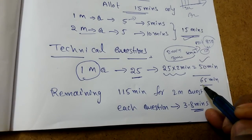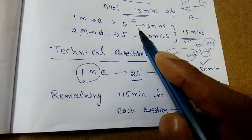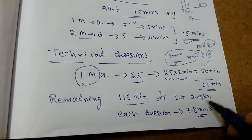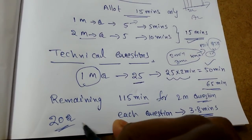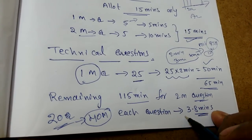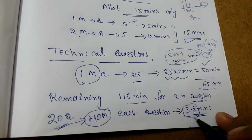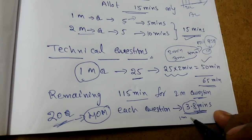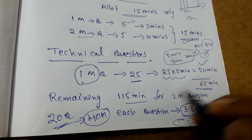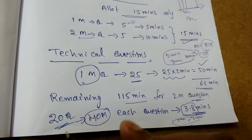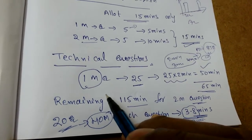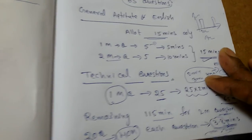So 50 minutes for technical one-mark questions plus 15 minutes for general aptitude equals 65 minutes allotted so far. The remaining 115 minutes should be for the technical two-mark questions. If you solve 20 questions correctly from the two-mark section, you get 40 marks. With 115 minutes allotted, the maximum time per two-mark question is about 3.8 minutes. When you solve the questions you know quickly, you may get five or more minutes for the harder ones.